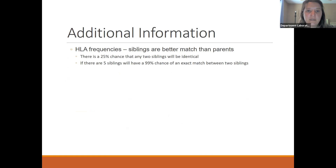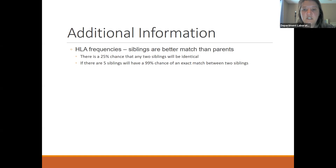Remember: the more siblings you have, the better chance you have of finding an HLA match. If you have two siblings, you have a 25% chance. If you have five siblings, it's approximately a 99% chance of finding an exact HLA match.